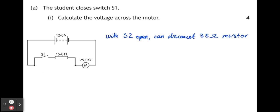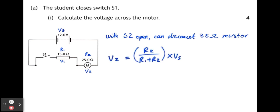Effectively, we have now a series circuit containing a supply voltage of 12 volts, one resistor of 15 ohms, and a second resistor, which is the motor, of 25 ohms. The supply voltage will split between the two components, so we can treat this as a potential divider to find out the voltage across the motor, using the formula V2 equals R2 over R1 plus R2 times Vs. So 25 over 15 plus 25 times 12, which is 7.5 volts.